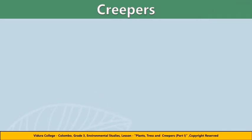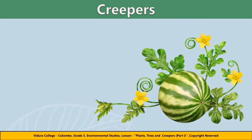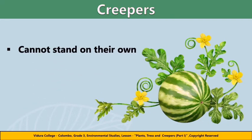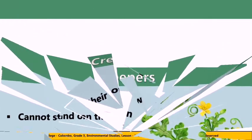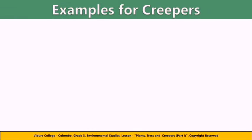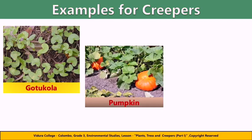Now it's time to learn about creepers. Creepers are generally considered to be small, tiny plants that grow close to the ground as they cannot stand on their own. Here are some examples for creepers. Coticola is a small creeping medicinal plant. The pumpkin plant produces pumpkin, which is a large rounded orange or yellow fruit with a thick rind.